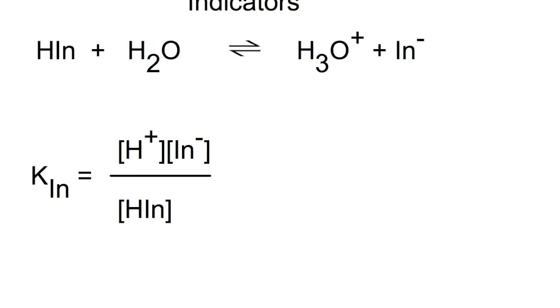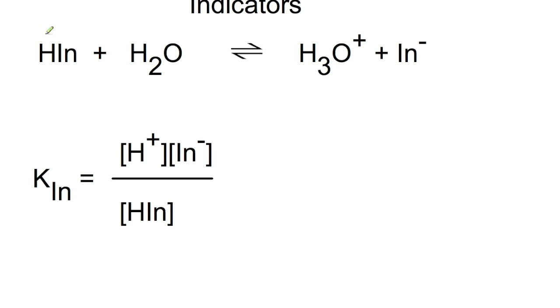For example, in this reaction here, our weak acid may be yellow, whereas our conjugate base, IN-, may be pink.